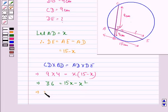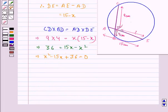This implies X square minus 15X plus 36 is equal to 0. This implies X square minus 12X minus 3X plus 36 is equal to 0.